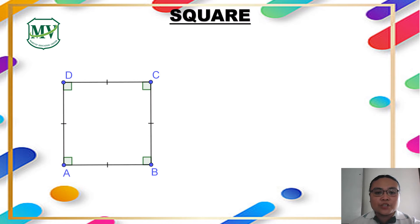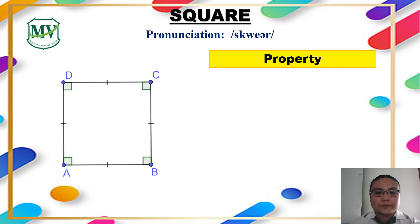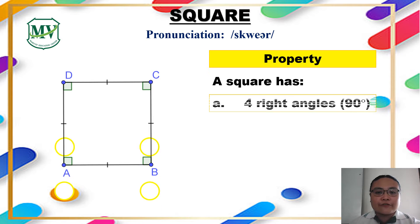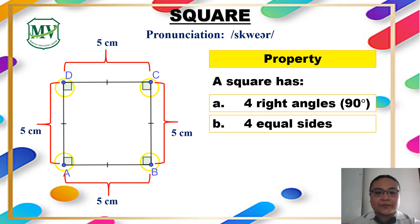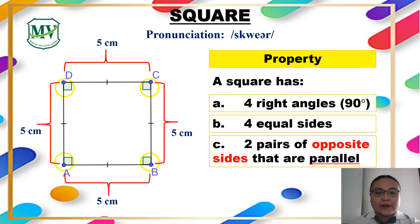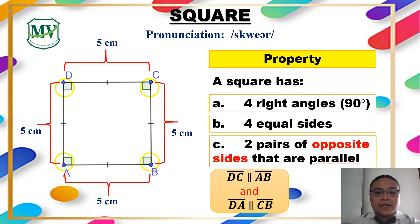Let us start with square. What are the properties of a square? A square has four right angles. Right angles measure exactly 90 degrees. A square has four equal sides — meaning, if one side measures five centimeters, all sides are five centimeters. A square also has two pairs of parallel sides. Line segment BC is parallel to its opposite side AB, and line segment DA is parallel to its opposite side CD.